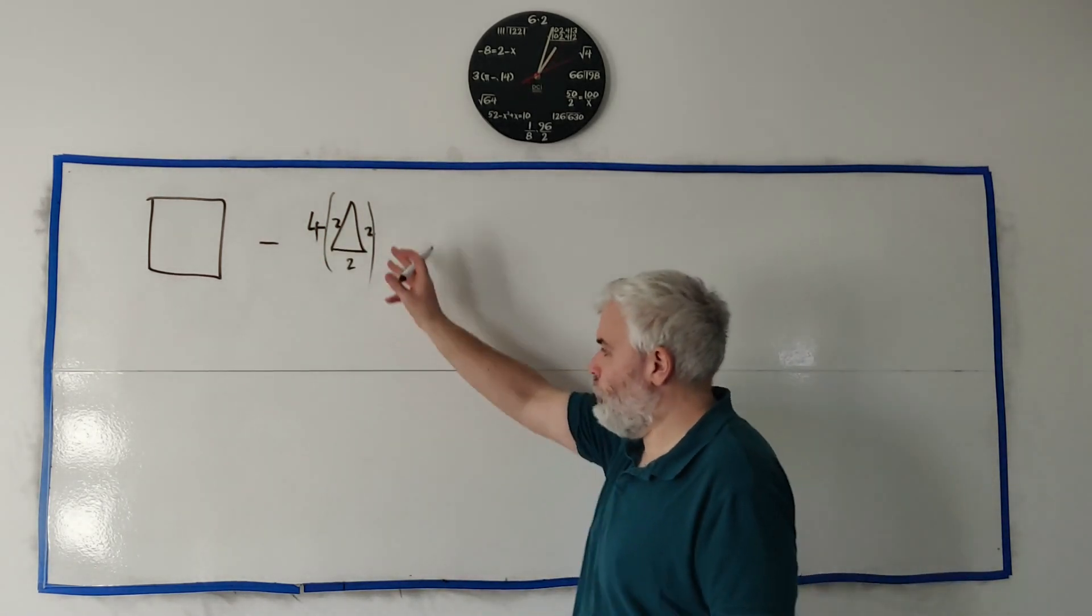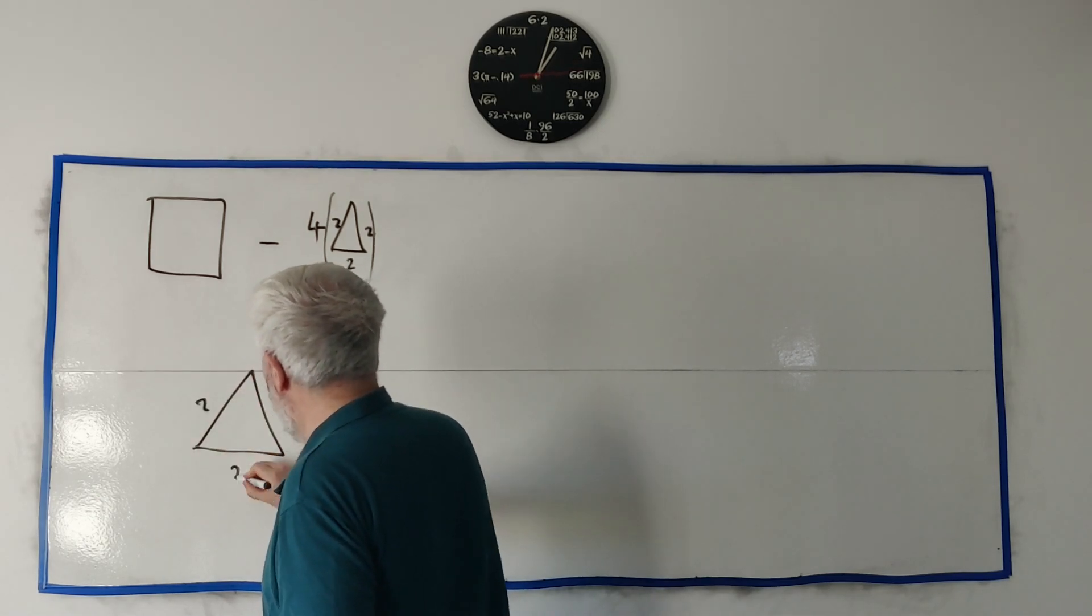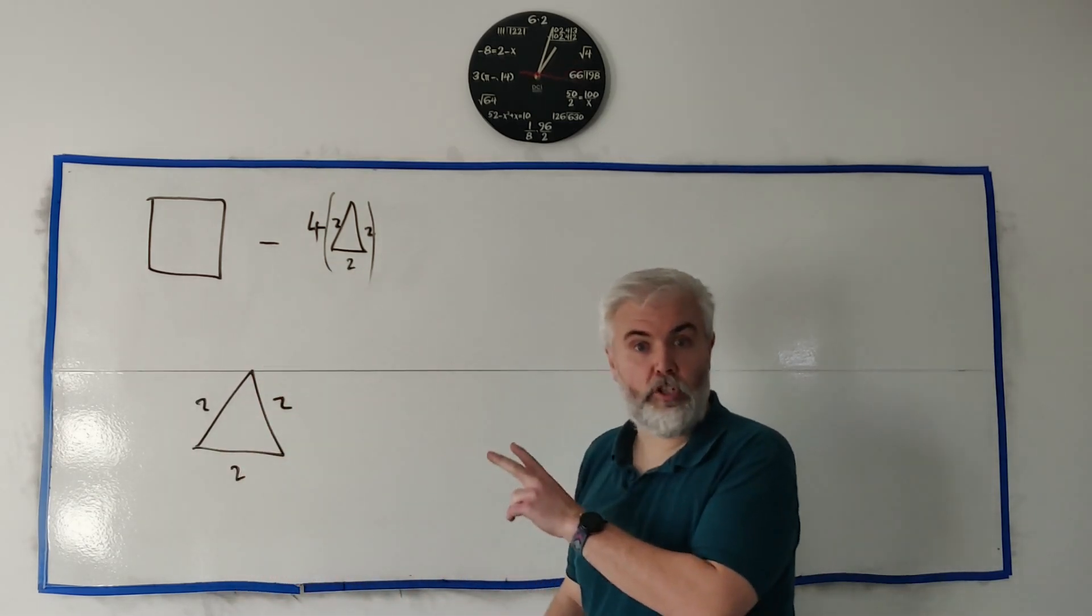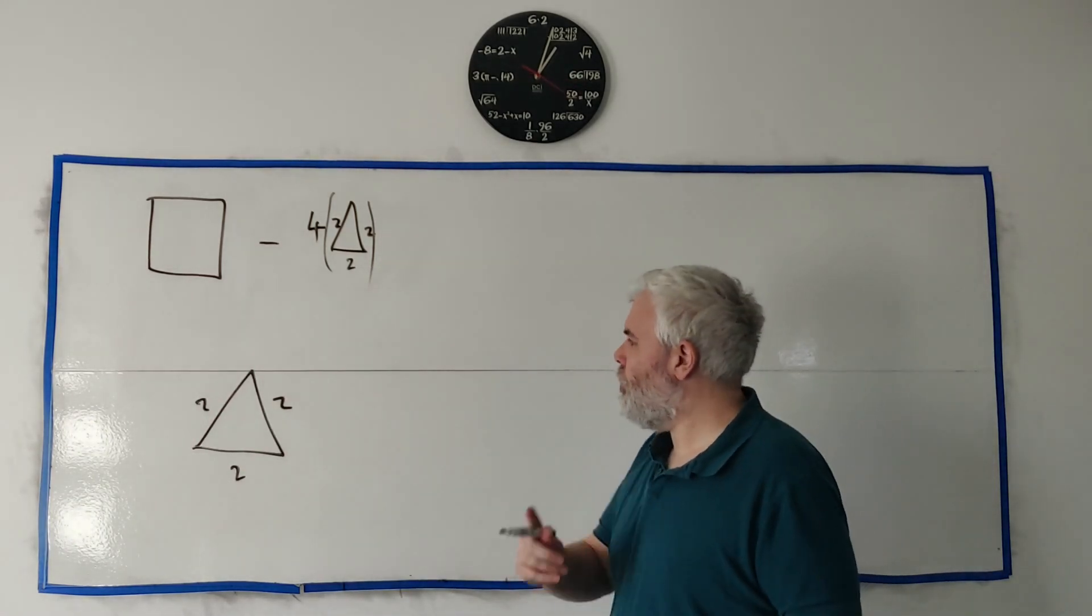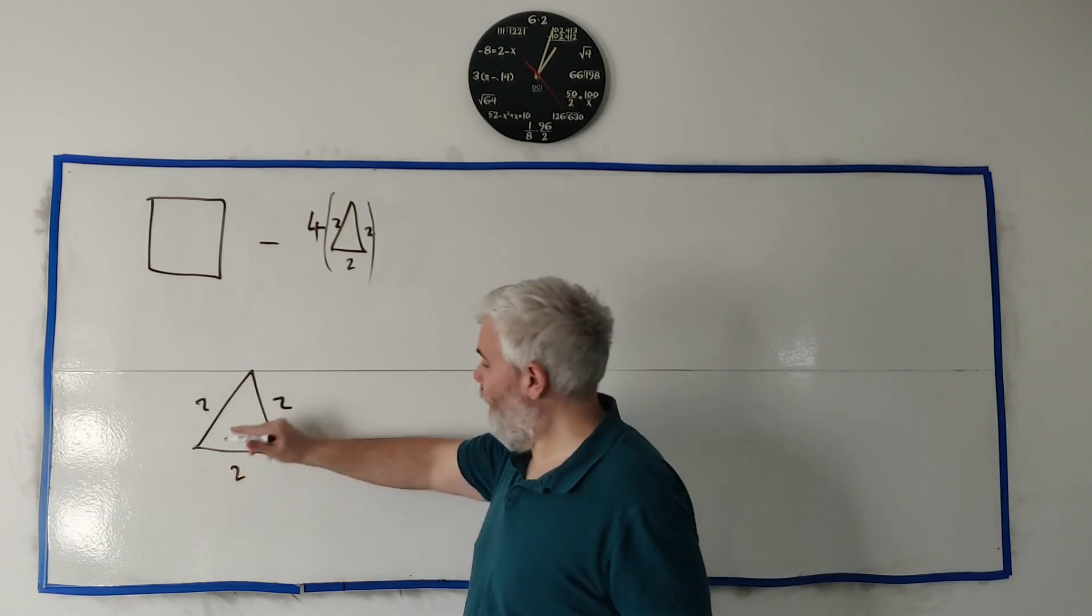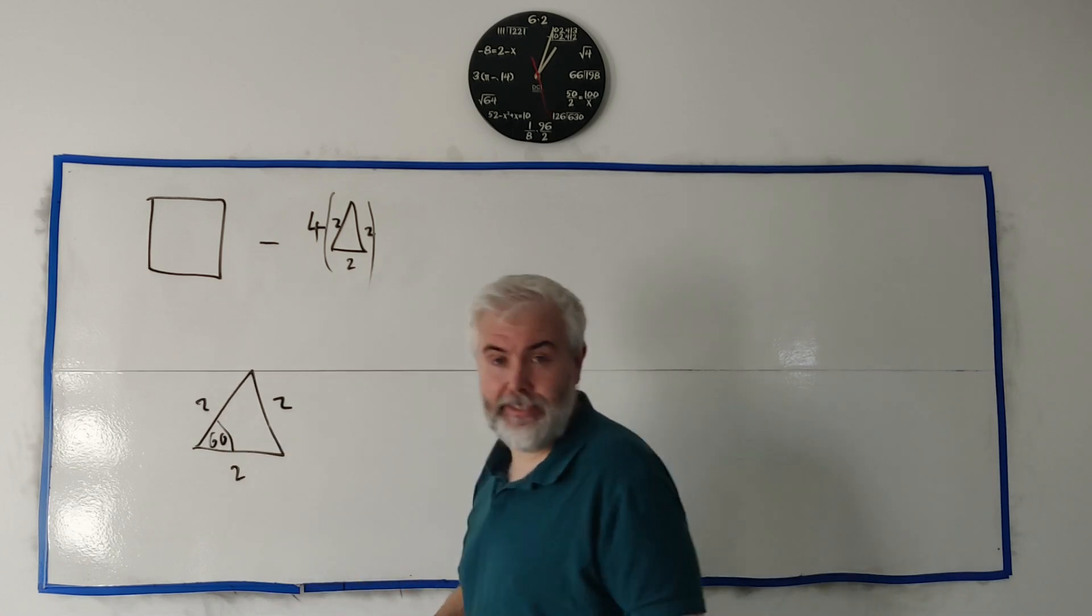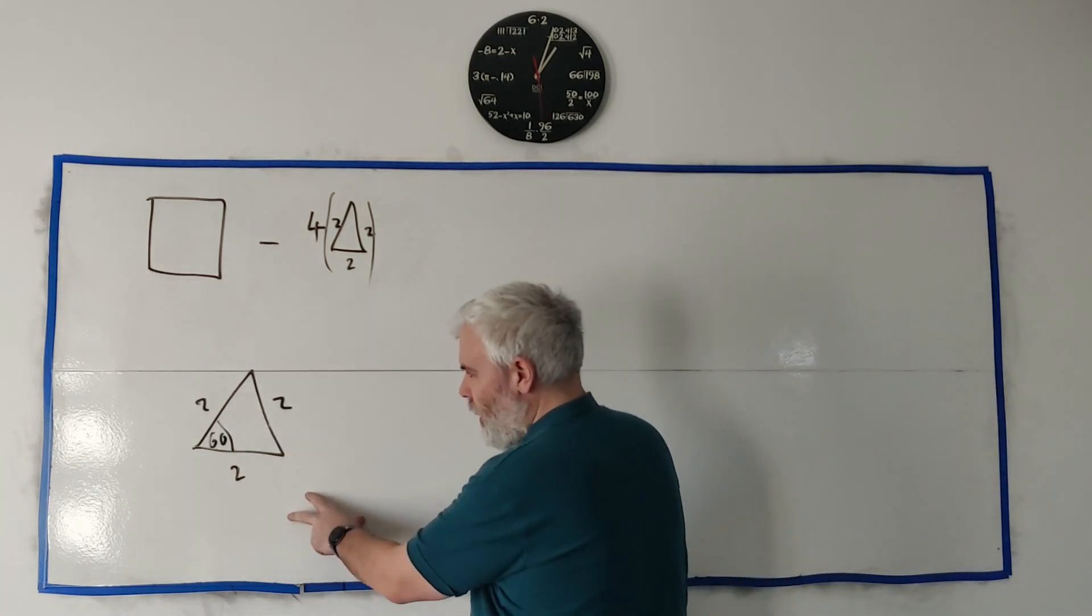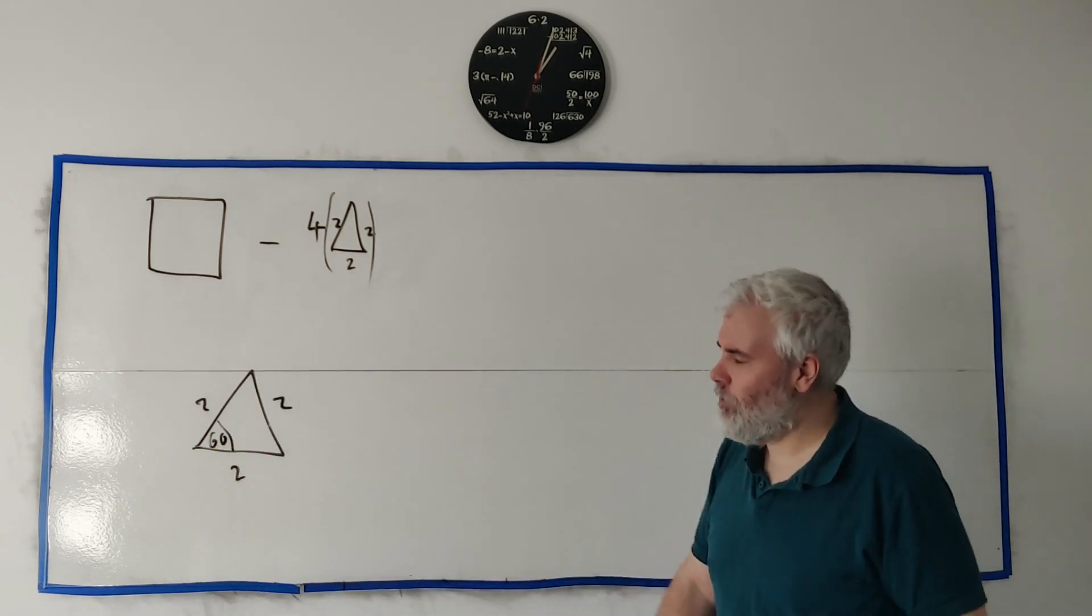Let's start off with the triangle first. We know three whole sides of it. There is actually a formula that will tell us the area of a triangle when we know three sides. There is also another formula when we know an angle, and in this case it's an equilateral triangle so we know the angle is 60 degrees. So the area of this triangle is two times two times half of the sine of 60.